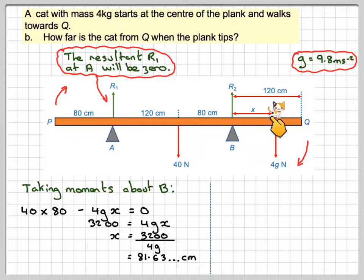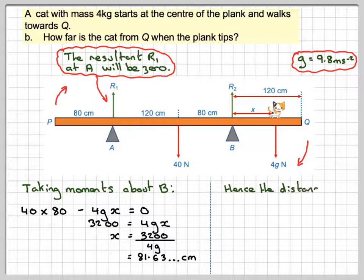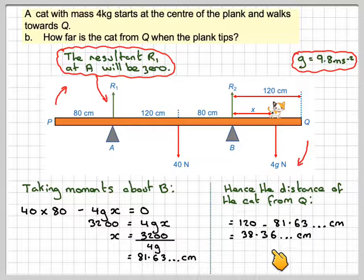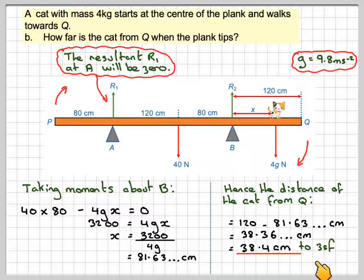So this distance here is 81.63 centimetres, but we're asked to find how far the cat is away from Q. So therefore the distance of the cat from Q is going to be 120, because this distance is 120, minus X, which is 81.63, which gives me an answer of 38.36 centimetres, which gives me 38.4 centimetres to three significant figures.